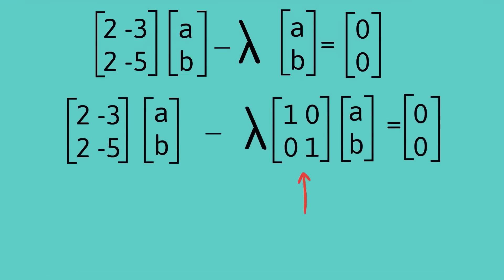What we can now do is before the lambda and the vector [a,b] we can put a matrix [1,0; 0,1], the so-called identity matrix, and the identity matrix has no effect when we multiply a vector by it. So I'm perfectly entitled to put that in there.